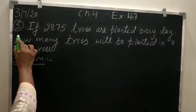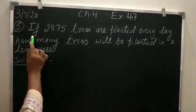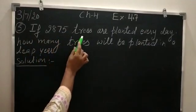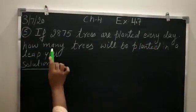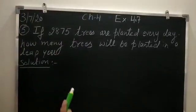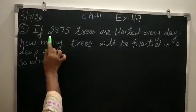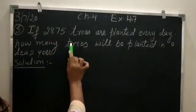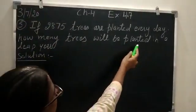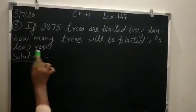Let's start sum number 5. If 2875 trees are planted every day, every day means in one day the tree is planted, that is 2875. How many trees will be planted in a leap year?